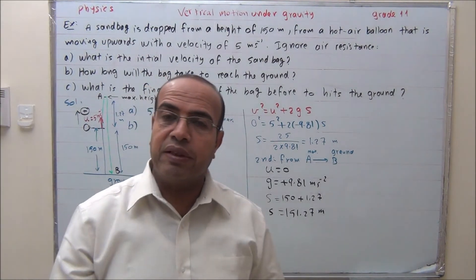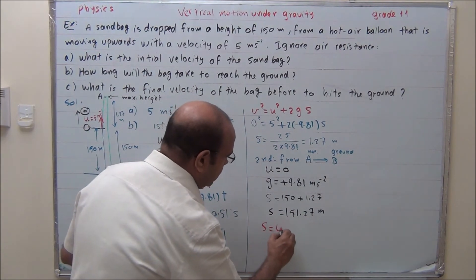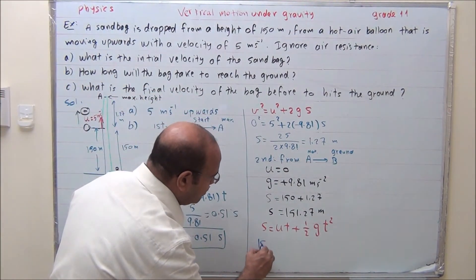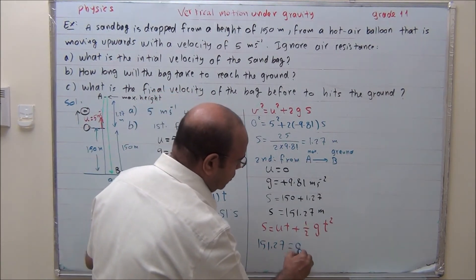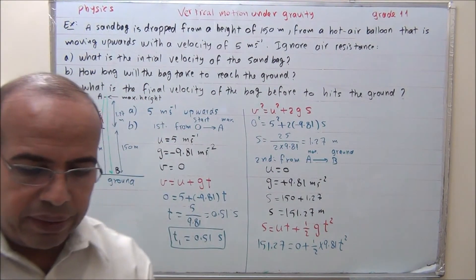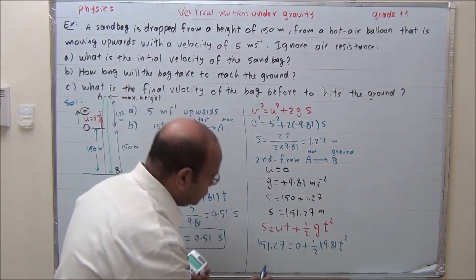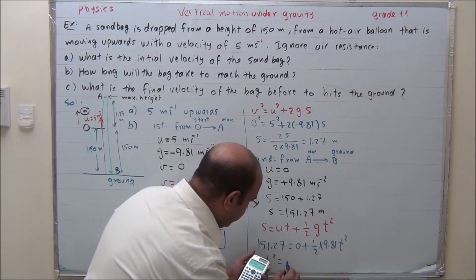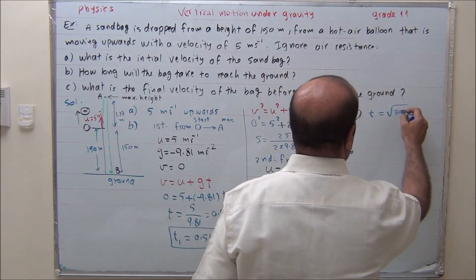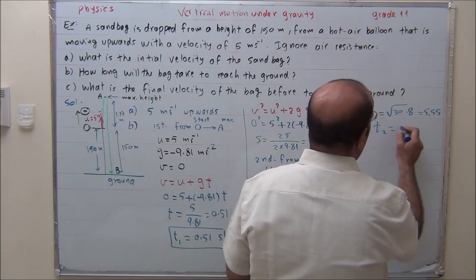We need the time T2. We have U, G, and S, so we use the formula S equals U·T plus half G·T squared. Substituting: 151.27 equals 0 plus half times 9.81 times T squared. Dividing: T squared equals 151.27 divided by (0.5 times 9.81), giving T squared equals 30.8. Taking the square root, T2 equals 5.55 seconds.